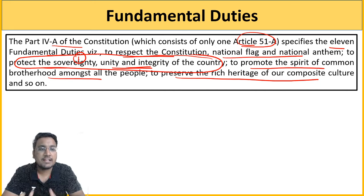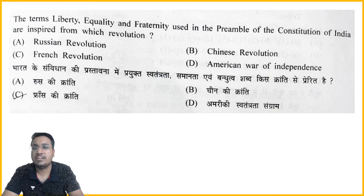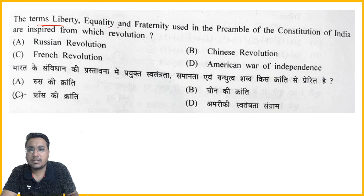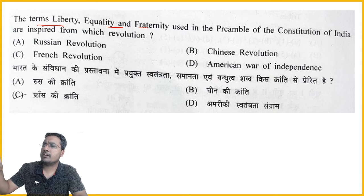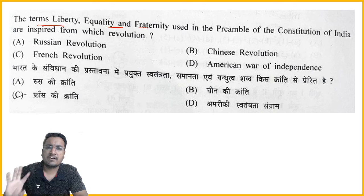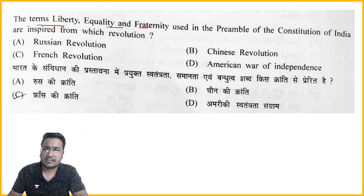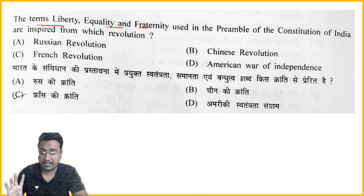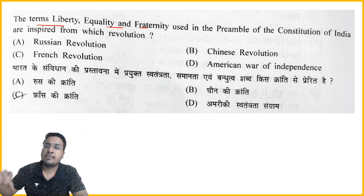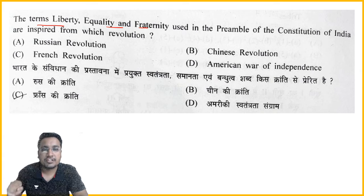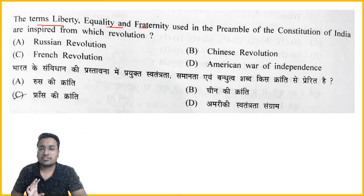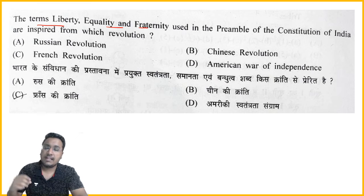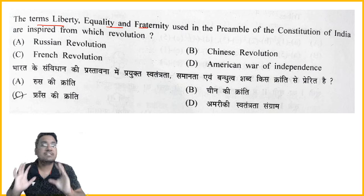Next: the terms liberty, equality and fraternity. This is from the topic of borrowings of the constitution — where did the words liberty, equality and fraternity in our Preamble come from? The options are Russian Revolution, Chinese Revolution, French Revolution, or American War of Independence. We have a complete table covering things borrowed from different countries and constitutions, and every paper asks at least one question related to this. We will cover that entire table today.